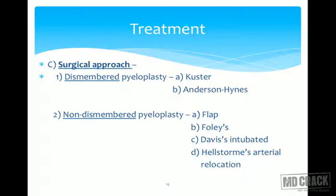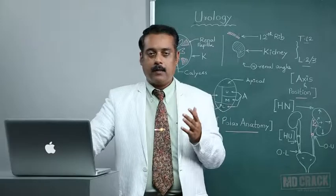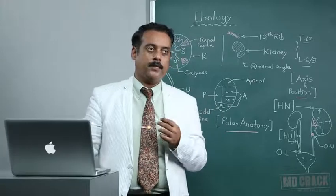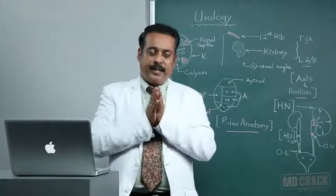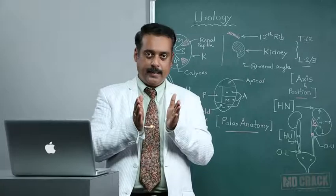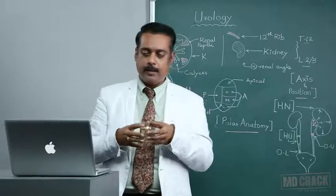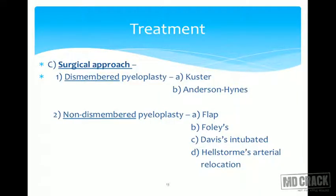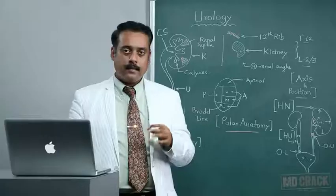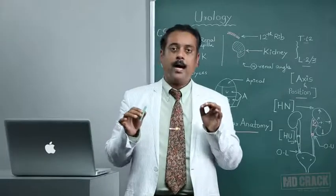Surgical approaches are the last option. There are two main types of pyeloplasty: dismembered pyeloplasty versus non-dismembered pyeloplasty. In dismembered pyeloplasty, the affected junction — the affected PUJ — is actually separated, refashioned, and reunited. The gold standard operation for this entity is the Anderson-Heinz pyeloplasty.